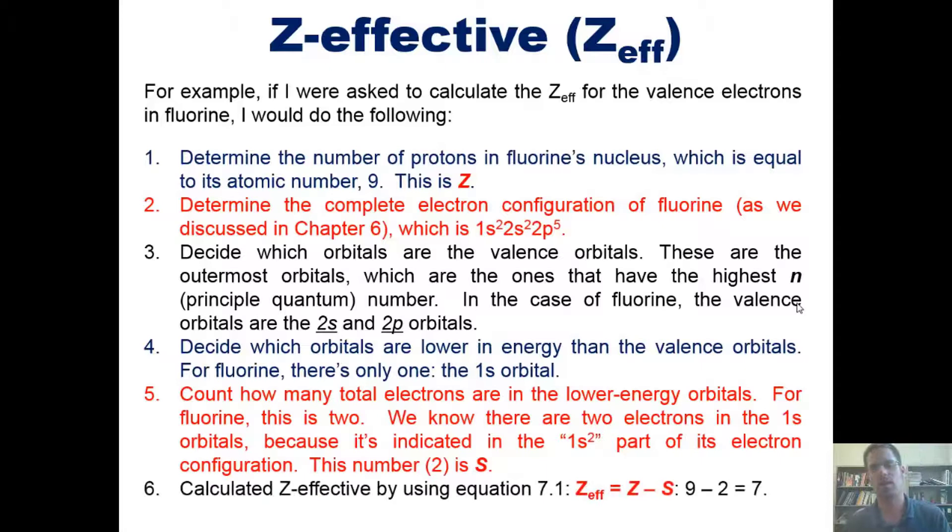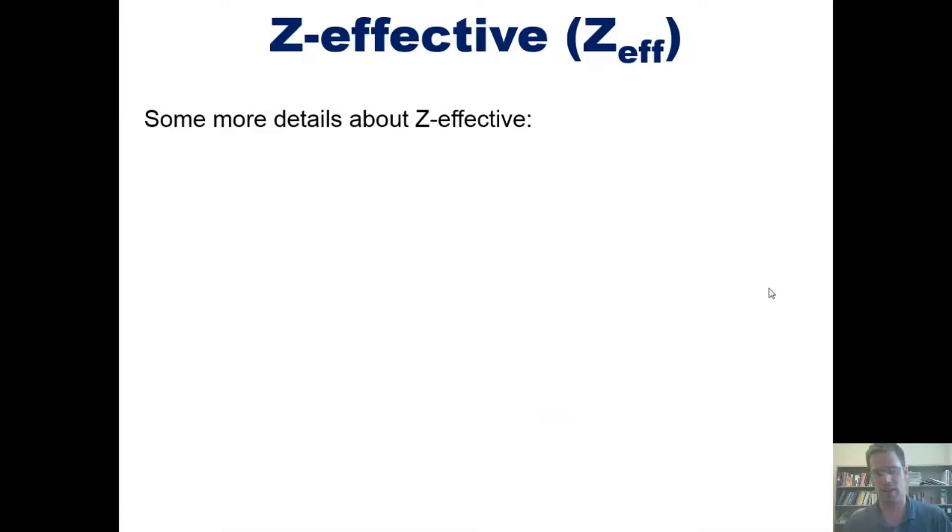In step six, we now calculate the Z-effective using that equation, which is equal to Z minus S, which for the numbers we've been given are 9 minus 2, which equals 7. That is the Z-effective for an outermost electron in fluorine. Now for some more details about Z-effective.